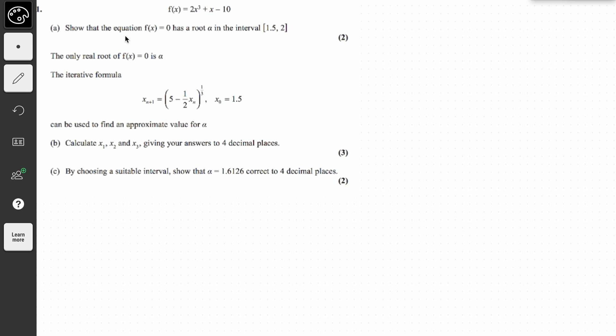In this question, they have given us a function, which is f(x) = 2x³ + x - 10. And in the first part, they're asking us to show that the equation f(x) = 0 has a root alpha in the interval [1.5, 2].